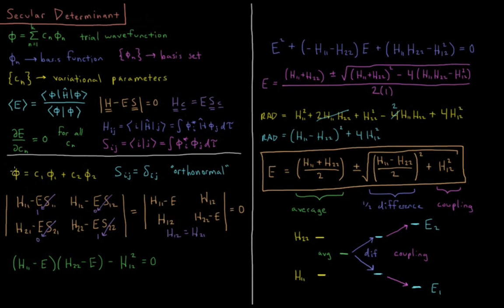Our trial wave function is going to be a linear combination of two basis functions, c1 times phi1 plus c2 times phi2. c1 and c2 are both going to be real numbers, as are phi1 and phi2 going to be real functions for all values of x.